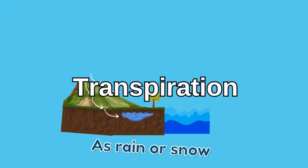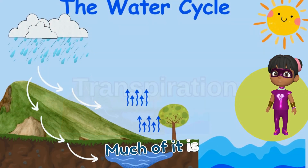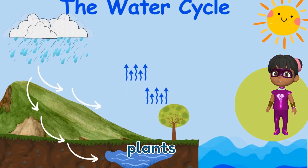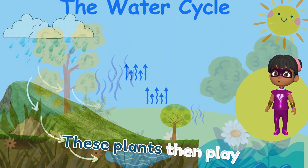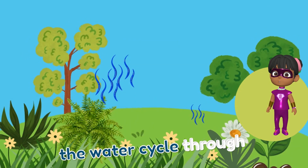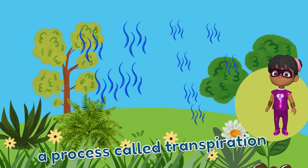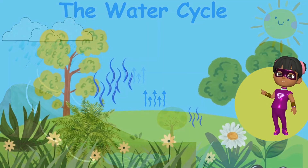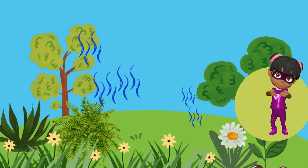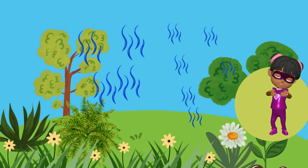As rain or snow falls back to the earth, much of it is absorbed by the soil and taken up by plants. These plants then play a crucial role in the water cycle through a process called transpiration. During transpiration, water absorbed by plant roots travels up to the leaves and then evaporates into the air.